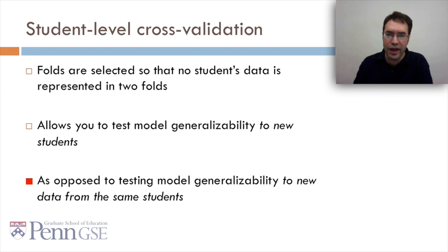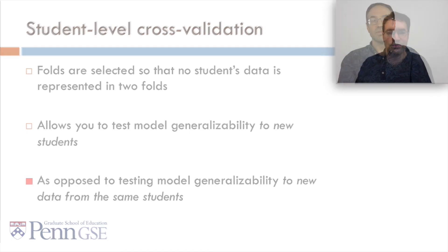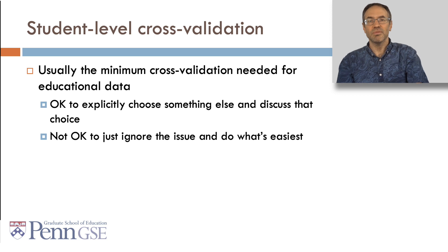Oftentimes a model will look great for flat cross-validation, but will completely bomb on student-level cross-validation. And if your goal is to work for new students, you better pay attention to that. Now, student-level cross-validation is usually the minimum cross-validation needed for educational data. It's okay to explicitly choose something else and discuss and justify that choice, but it's not okay to just ignore the issue and do what's easiest.